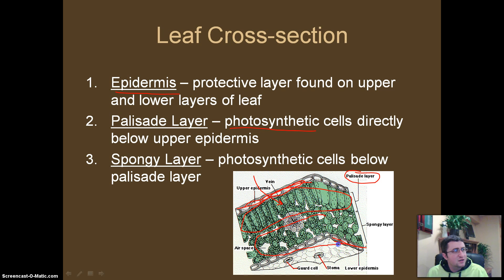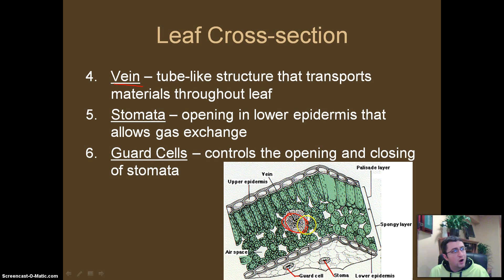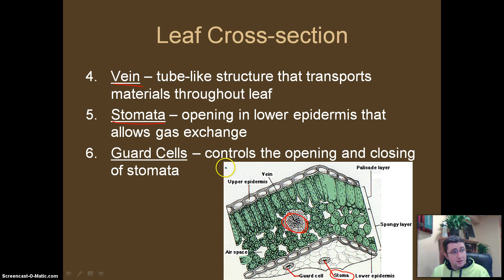Underneath the palisade layer, we have the spongy layer. These cells are spaced out quite a bit, but any sunlight that made it through the palisade layer will enter the spongy layer and also photosynthesize, producing some food for the plant. We have a vein, which is a tube-like structure that transports material out through the leaf — very similar to our veins, transporting materials in and out as needed. We also have stomata — or if we have one, it's called a stoma — which is a little opening in the bottom of a leaf that allows for gas exchange. Carbon dioxide goes in through the stoma, and oxygen is created by the palisade and spongy layers and flows out through the stoma into the air so that we can breathe it in.